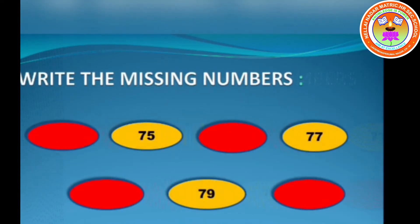Write the missing numbers. Before 75 is 74. After 75 is 76. After 77 is 78. After 79 is 80.